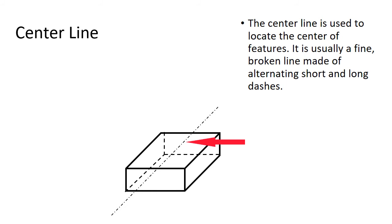The center line is used to locate the center of features. It is usually a fine broken line made of alternating short and long dashes. So it's a dashed line, but it's a different dashed line than when we have a hidden line.